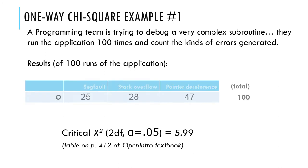Let's get the results. The observed values, they ran their program 100 times. 25 times it generated seg faults, 28 stack overflow, and 47 times it generated a pointer dereference. Those add up to 100. They've set this up so that there is only one thing that can happen for each run of the program, so the categories are mutually exclusive of each other. Now, we can look up our critical chi-square value. It has two degrees of freedom because there are three categories minus 1 is 2.